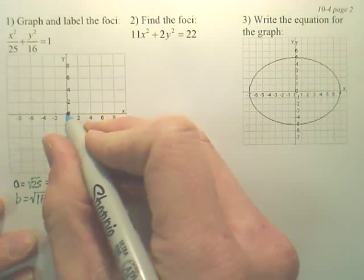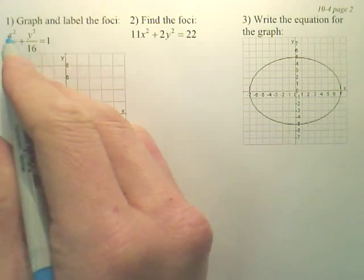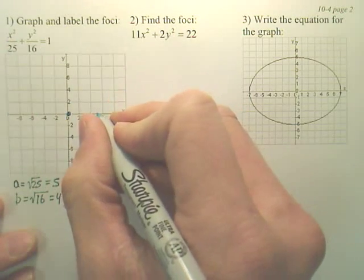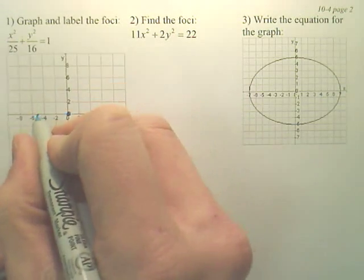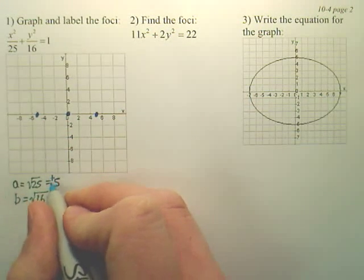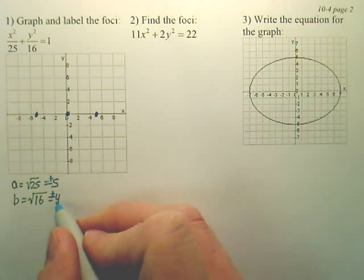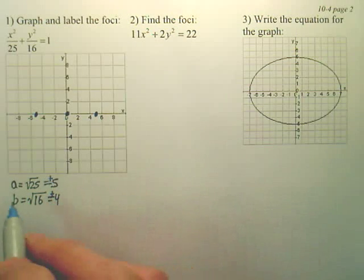So what that means is, here's my center, this means we're going to go 5, and again it comes from the x, so I'm going to go 5 on the x-axis in both directions. Actually that would be plus or minus, I should probably put plus or minus there, because positive or negative 5, because you're square rooting it.